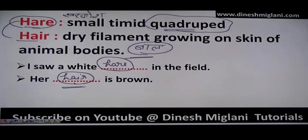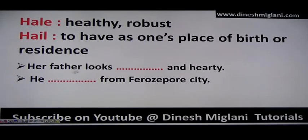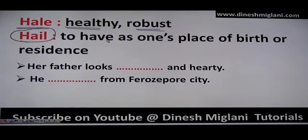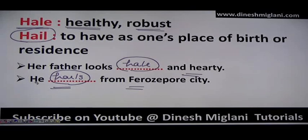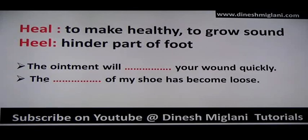Next: 'hale' (H-A-L-E) and 'hail' (H-A-I-L). Hale means healthy and robust. Hail means to have as one's place of birth or residence — to belong to some place. Example: 'Her father looks hale and hearty' — meaning very healthy. 'He hails from Ferozpur city' — meaning that place is where the person belongs or was born.